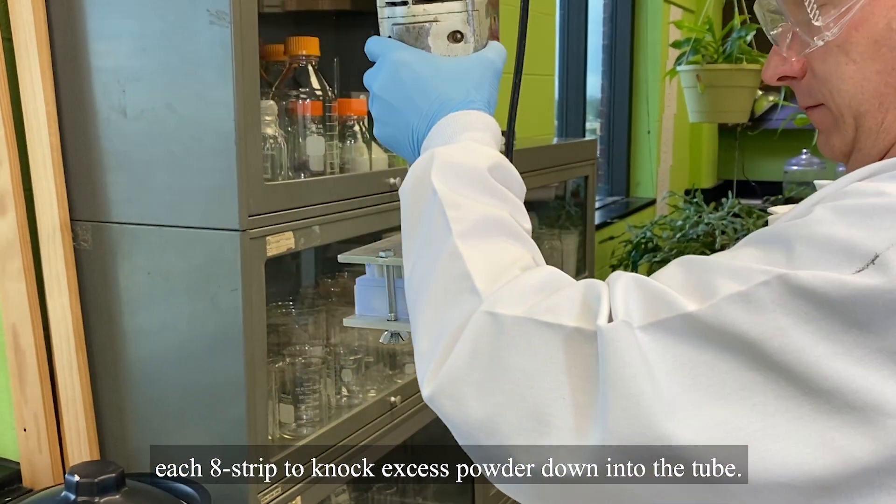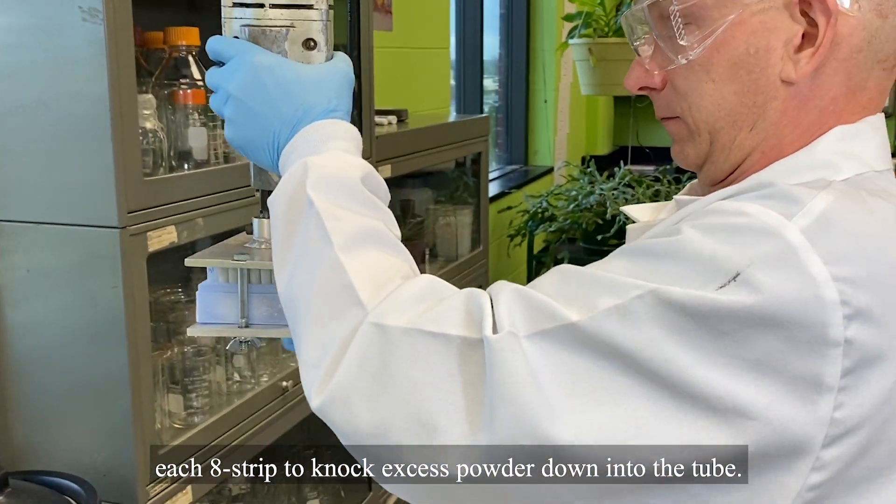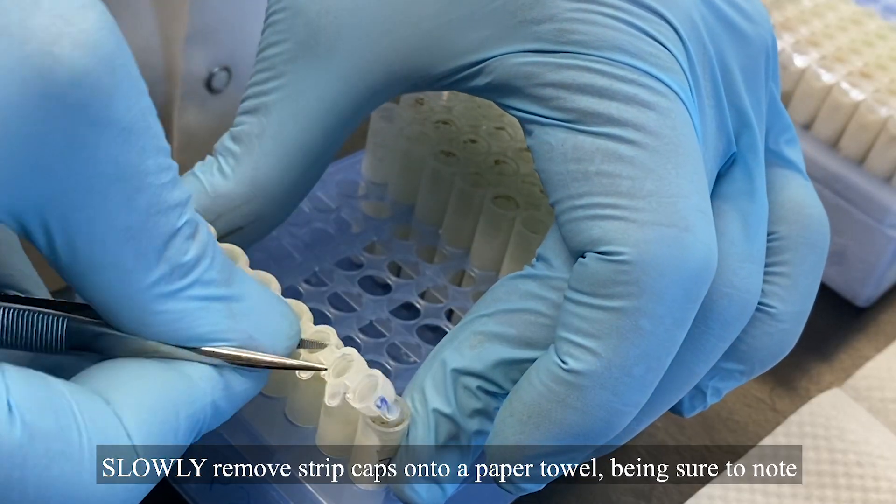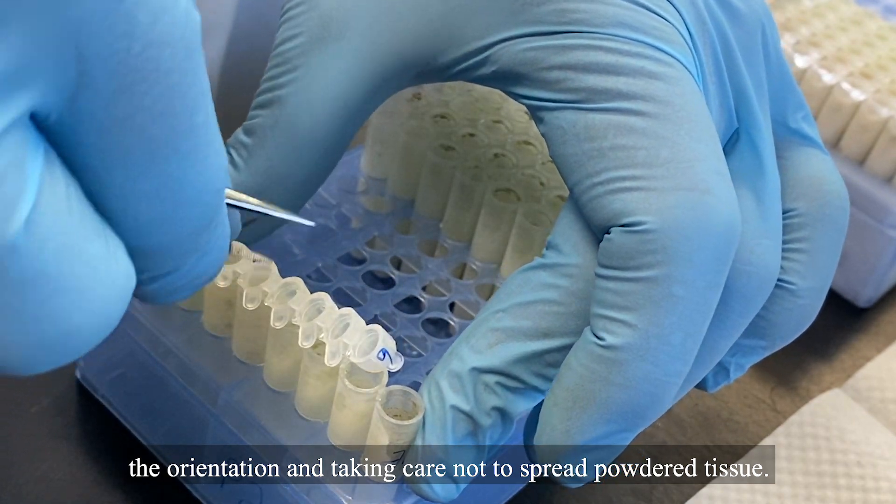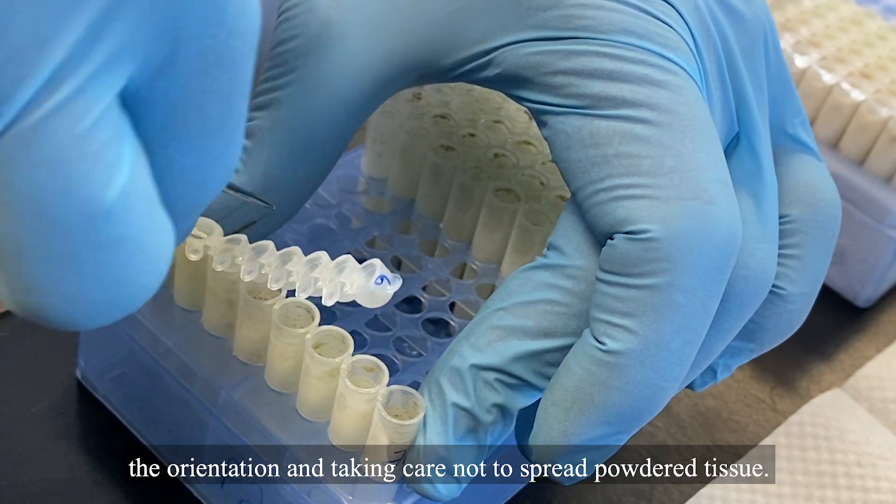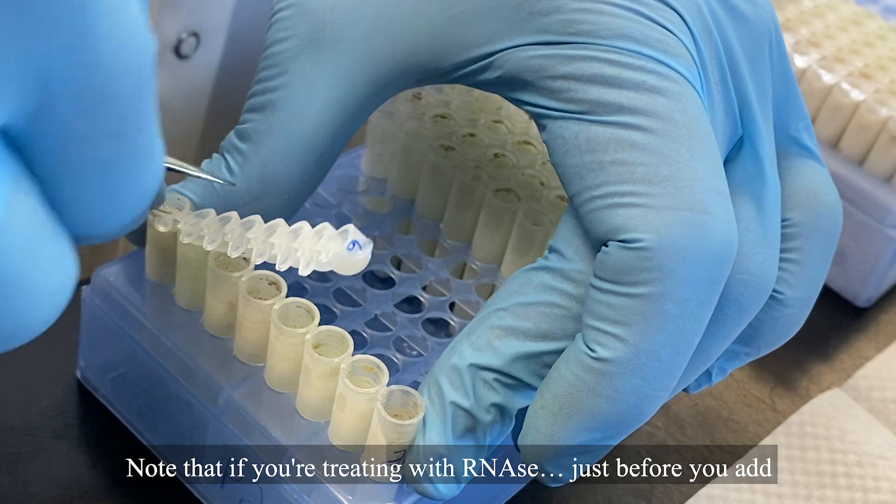Flick the top of each H strip to knock excess powder down into the tube. Slowly remove strip caps onto a paper towel, being sure to note the orientation and taking care not to spread powdered tissue. Note that if you're treating with RNase,